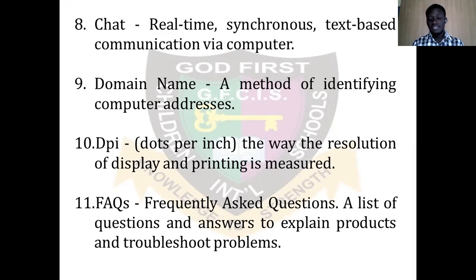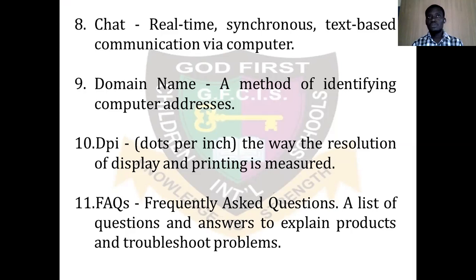Then we have FAQs — Frequently Asked Questions. These are a list of common questions and answers about a product, screen, or computer problem. When you go to a particular site you will see the FAQs section — these are common questions people have asked, such as how do I set my password, how do I change my profile picture, how do I do this or that. Frequently asked questions are common questions people ask when visiting a particular site.